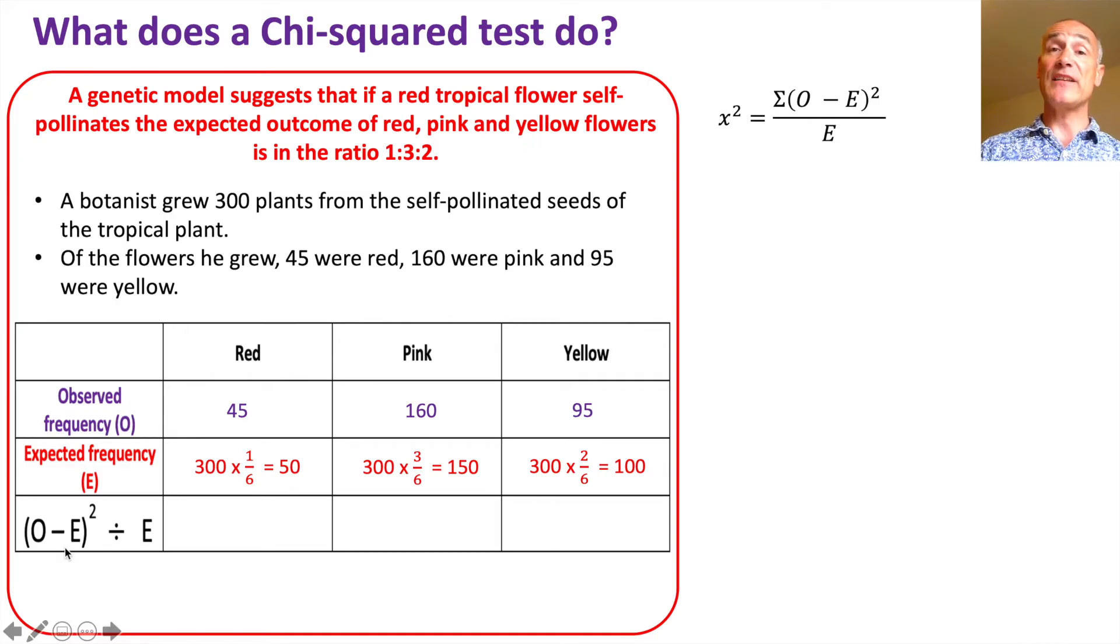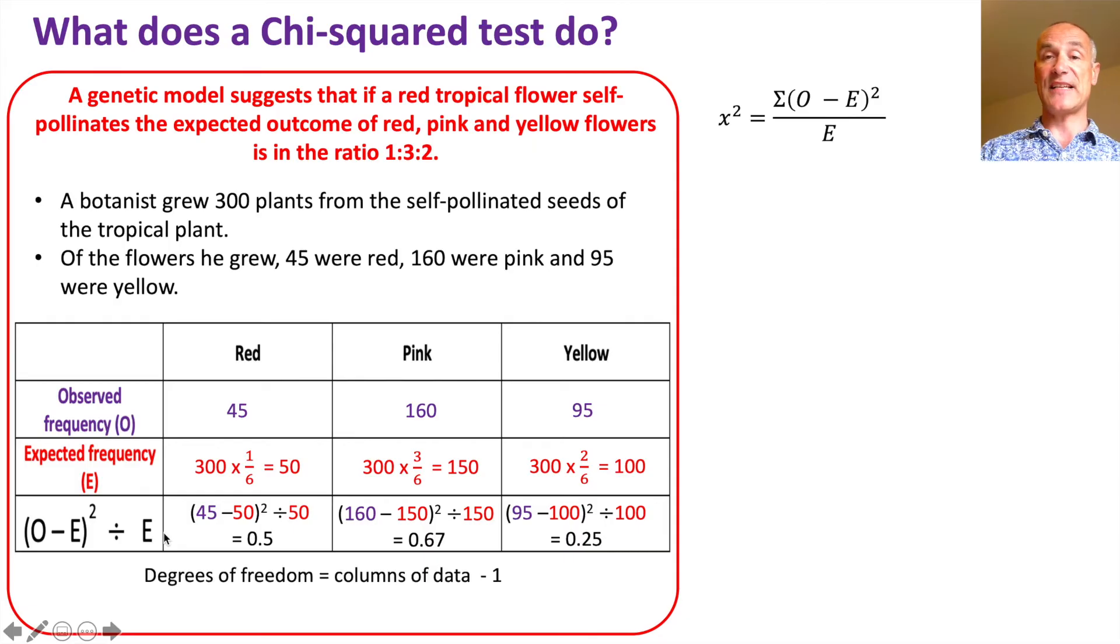We now calculate the chi-squared test by first of all working out these for each of the columns. So the observed is 45 minus 50 the expected, squared, divided by the expected 50, gives us 0.5. If we do that for the other two, we get that all together. And of course the chi-squared value is all those three added together.